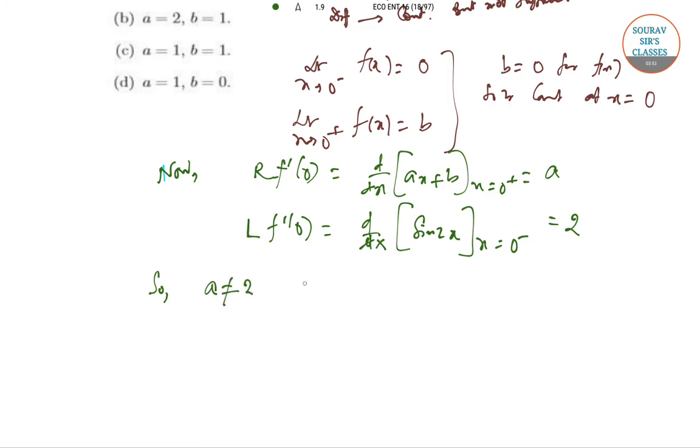So a not equal to 2, meaning a equals 1 and b equals 0. Just by solving, a not equal to 2 and b equals 0, so we can see that the answer is option (d). Next question.